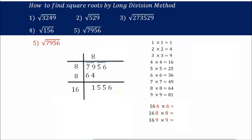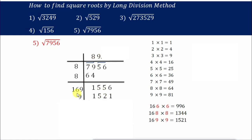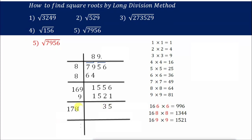8×8=64. Add 8 here: 8+8=16. 79 minus 64 is 15. Bring down 56, giving 1556. We have 16 here. Start pairing: 161×1=161 — that is too small for 1556. Trying bigger numbers: 166×6=996, 168×8=1344 — still not enough. Try 169×9=1521. That is the nearest number to 1556.